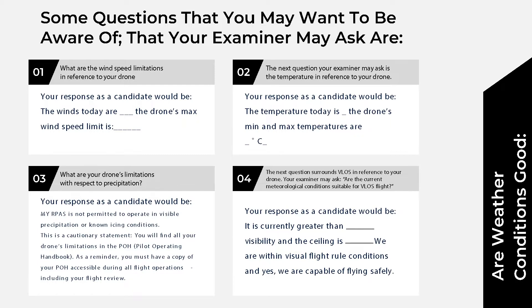Are weather conditions good? Some questions your examiner may ask: What are the wind speed limitations of your RPAS? Your response as a candidate would be: the winds today are X kilometers per hour and my drone's max wind speed limitation is Y kilometers per hour. The next question your examiner may ask is: what is the temperature limitation of your drone? Your response would be: the temperature today is X degrees Celsius and the drone's minimum and maximum temperatures are X to Y degrees Celsius.